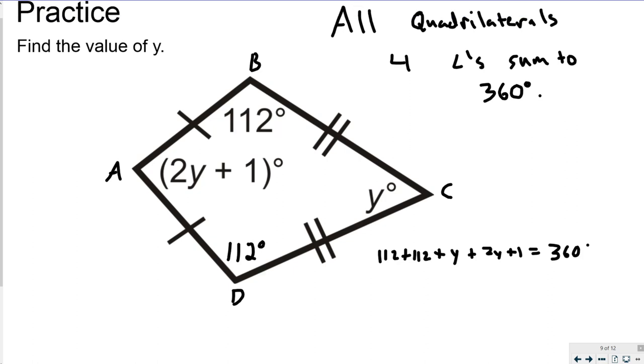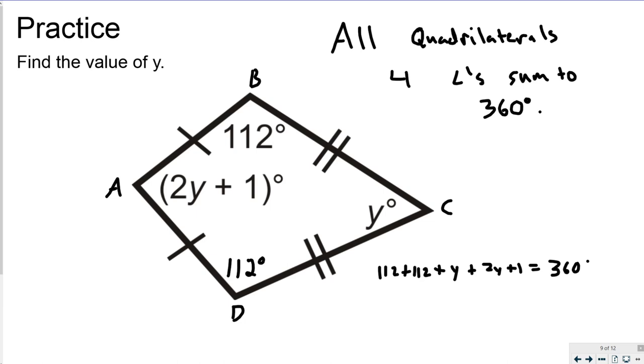And this is a direct result of the all quadrilaterals four angles sum to 360. So I have angle A, or this would be angle B, this would be angle D, angle C, and angle A. So I have all four angles included.